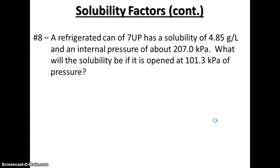A refrigerated can of 7-Up has a solubility of 4.85 grams per liter and an internal pressure of 2.07 kilopascals. What will the solubility be if it is opened at 101.3 kilopascals of pressure? First, we identify what we have: 4.85 grams per liter is solubility — that's S1. The 2.07 kilopascals is pressure — that's P1. When we open the can, the pressure decreases and we get P2 = 101.3 kilopascals, and we're solving for S2. Since this is a direct relationship, pressure decreased, so solubility should decrease as well.